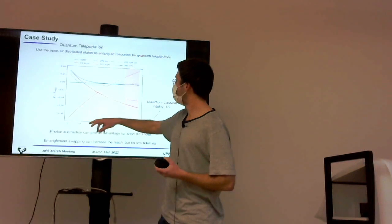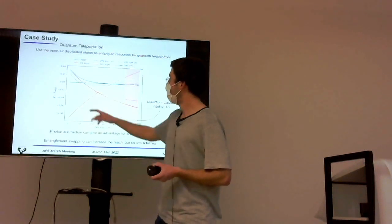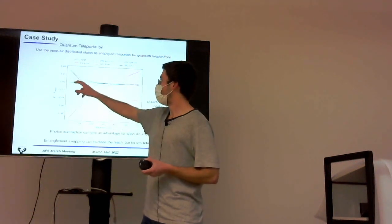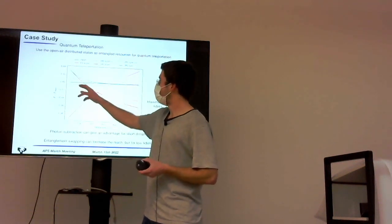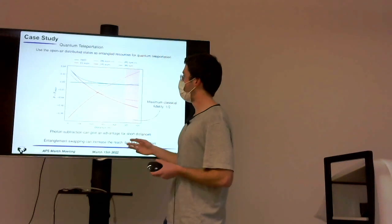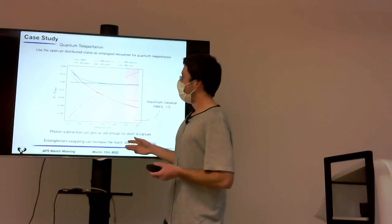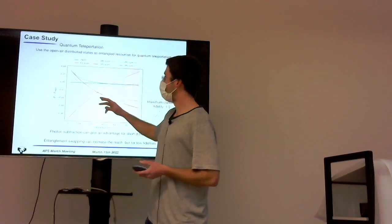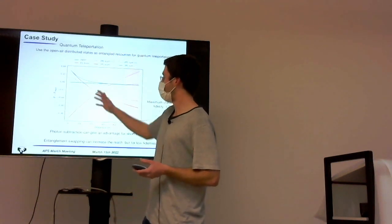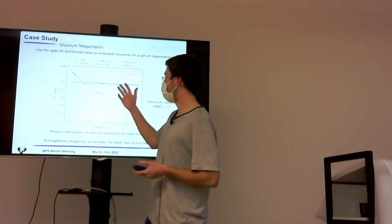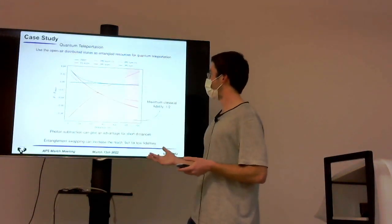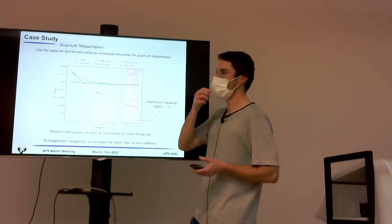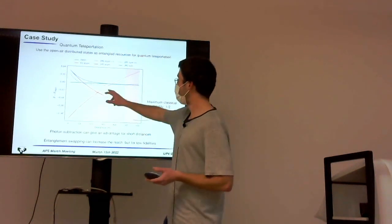See that, of course, theoretical photon subtraction works better than the probabilistic one, but they still both of them show some kind of advantage initially. And they lose the advantage with respect to the bare state without doing anything for, you know, a hundred meters, something like that. It's when the entanglement advantage given by photon subtraction is lost.